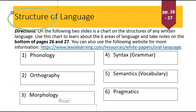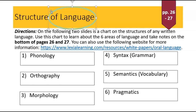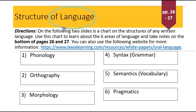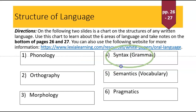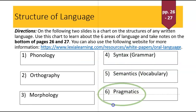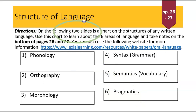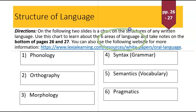Next, we're going to investigate the structure of language. All languages have a structure, and if they are a written language as well, they have these components: phonology, orthography, morphology, syntax, semantics, and pragmatics. What you're going to do — as it says on the top — is look at the next two slides after this one. Look at a chart and use those two slides to learn about these six areas of language, then take notes on the bottom underneath the timeline on pages 26 and 27.